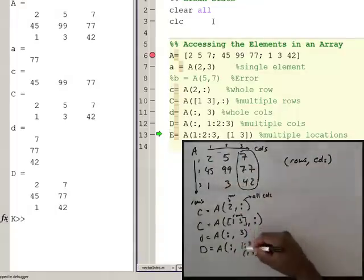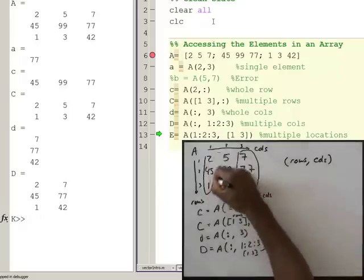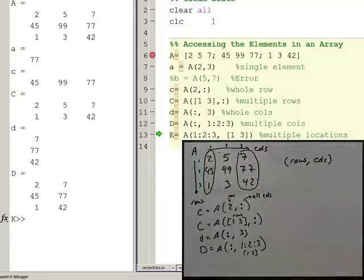And so we're going to do A, all rows, columns 1 and columns 3, and so capital D winds up being the array 2, 7, 45, 77, 1, and 42.